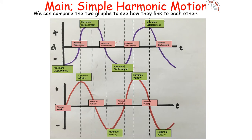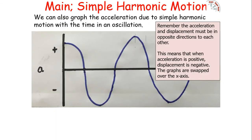You'll notice that the velocity graph and displacement graph are shifted by a quarter cycle from each other. One is a sine graph (velocity) and the other is a cosine graph (displacement). When you have maximum velocity, you have minimum displacement, and vice versa.